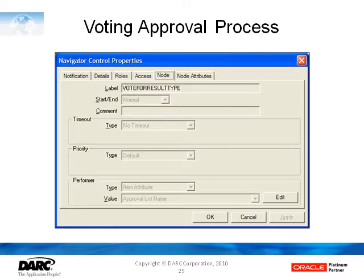Just like the standard approval process, this one has a performer that's the item attribute called approval list name, although in this one it is delivered seeded already. In fact, you can see by the gray in those areas that we can't even modify this process.